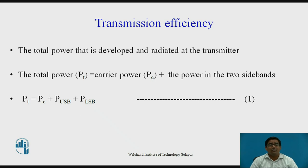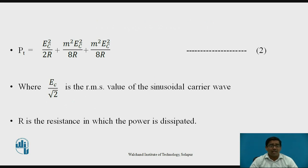The second part is transmission efficiency. The total power developed and radiated at the transmitter is: total power equals carrier power plus the power in the two sidebands — upper sideband and lower sideband. Therefore, the equation becomes: Pt = Pc + power in upper sideband + power in lower sideband. Substituting the values, the equation becomes: Pt = Ec²/2R + m²Ec²/8R + m²Ec²/8R, where Ec/√2 is the RMS value of the sinusoidal carrier wave and R is the resistance in which power is dissipated.